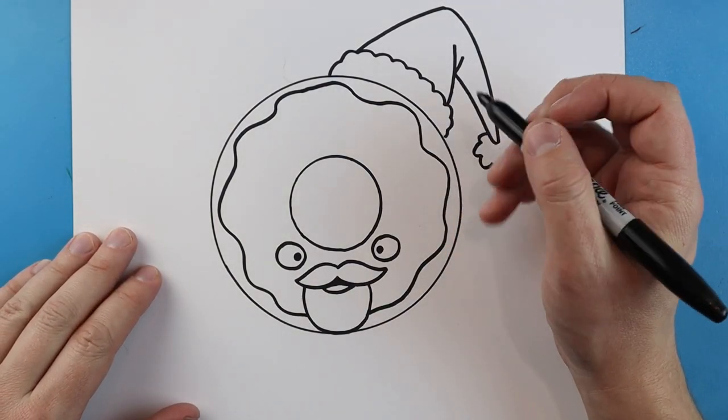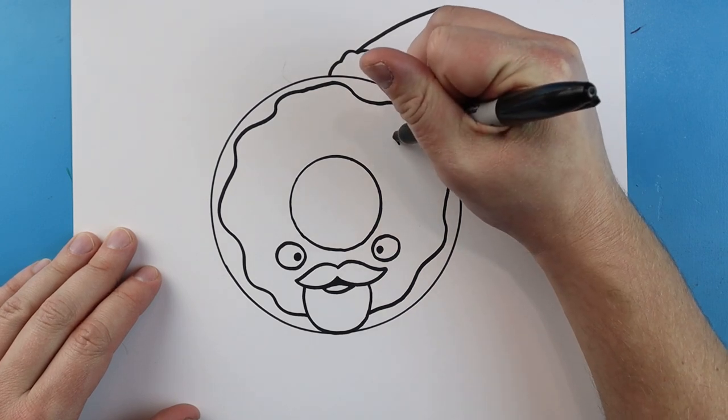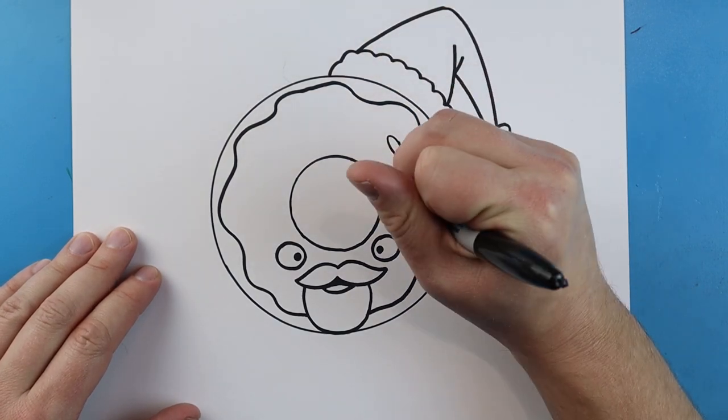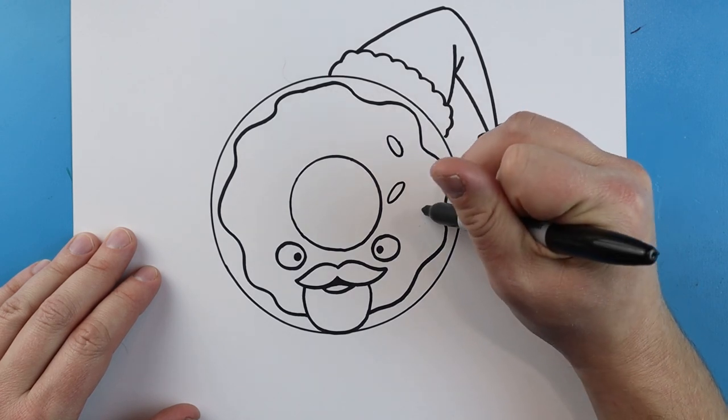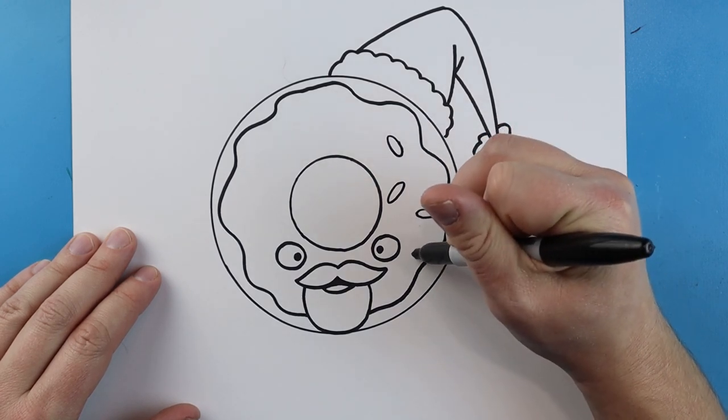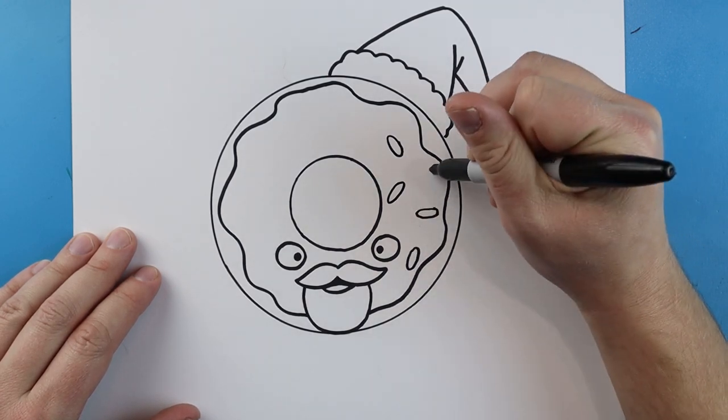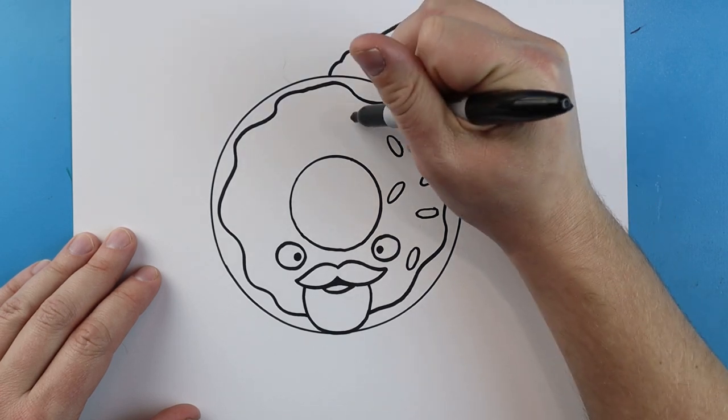Then we can come in here and add some little sprinkles. I'm going to make a bunch of little oval shapes all around here and the trick is we want these going all different directions, so it looks like they're just kind of randomly on here.